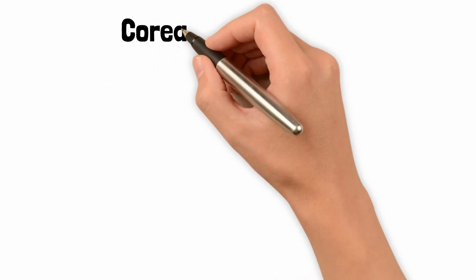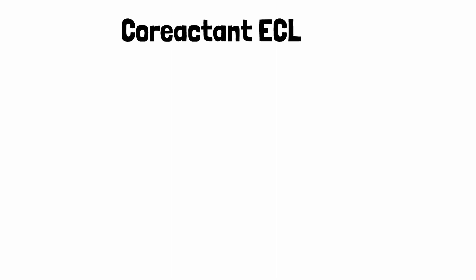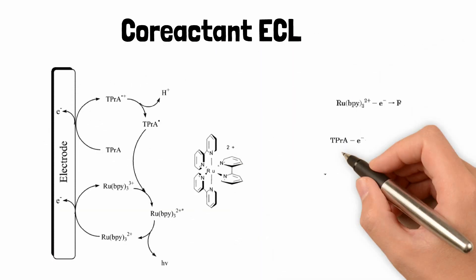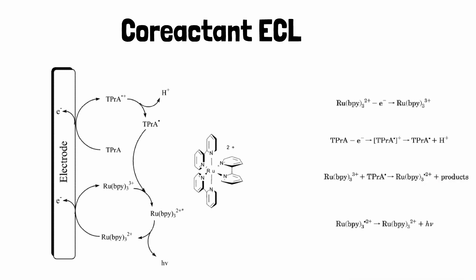It is also possible to generate ECL in a single potential step using a coreactant. A coreactant is a species that, upon oxidation or reduction, produces an intermediate that can react with an ECL luminophore to produce excited states. Usually, this occurs upon bond cleavage of the coreactant to form strong oxidants or reductants. For example, ECL is produced upon concomitant oxidation of Ru(bpy)3^2+ and TPRA.